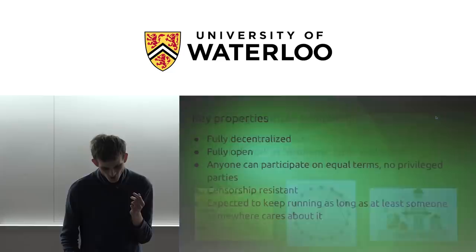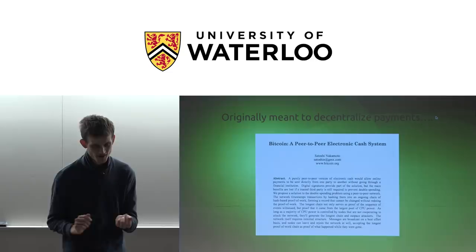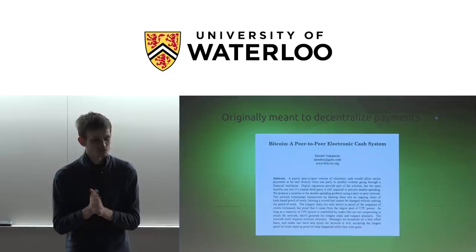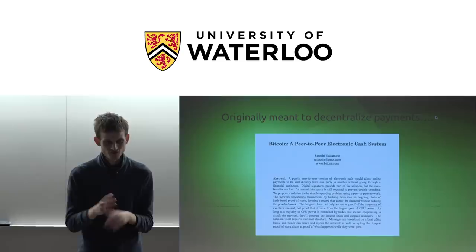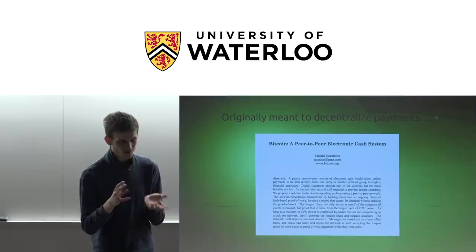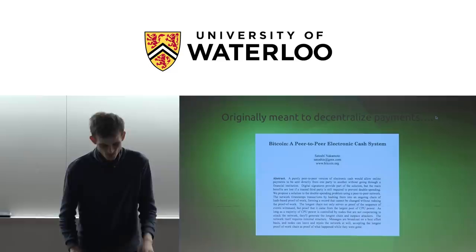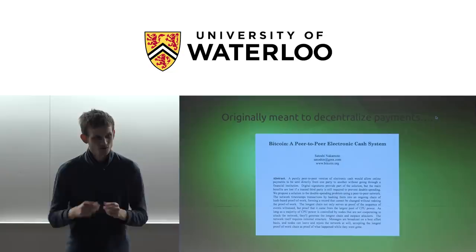There are actually two problems here. One is the problem of decentralized consensus, and the other is how do we measure participation rights in a fully open network. You could say instead of one server we'll have 10 servers and seven of them have to agree. But then you still have to choose who the 10 servers are, and what if people don't trust those 10 servers? Companies collude all the time — there's the LIBOR scandal and lots of instances of collusion everywhere.